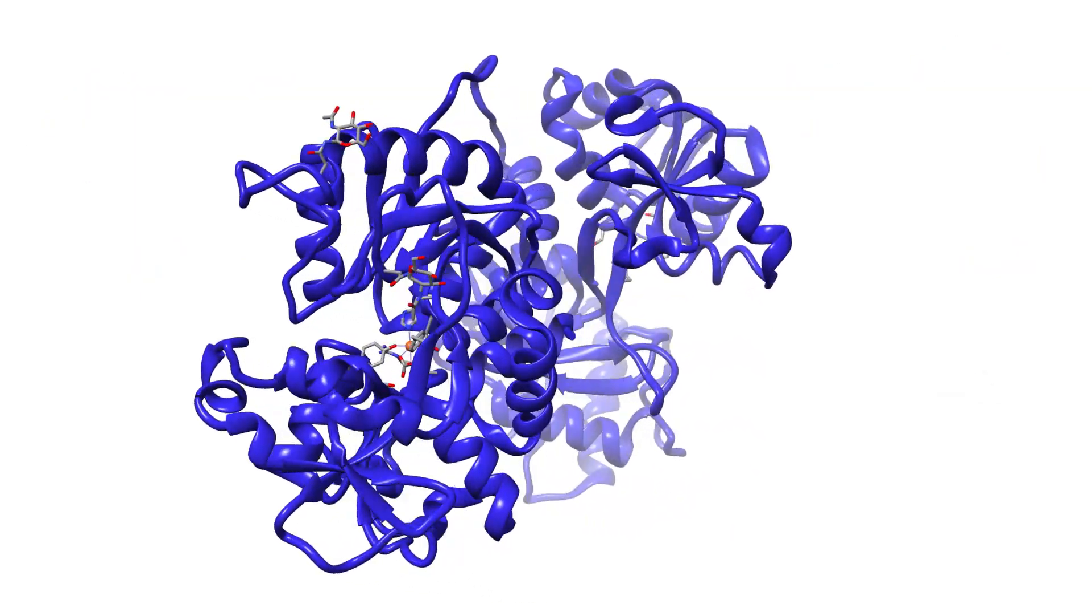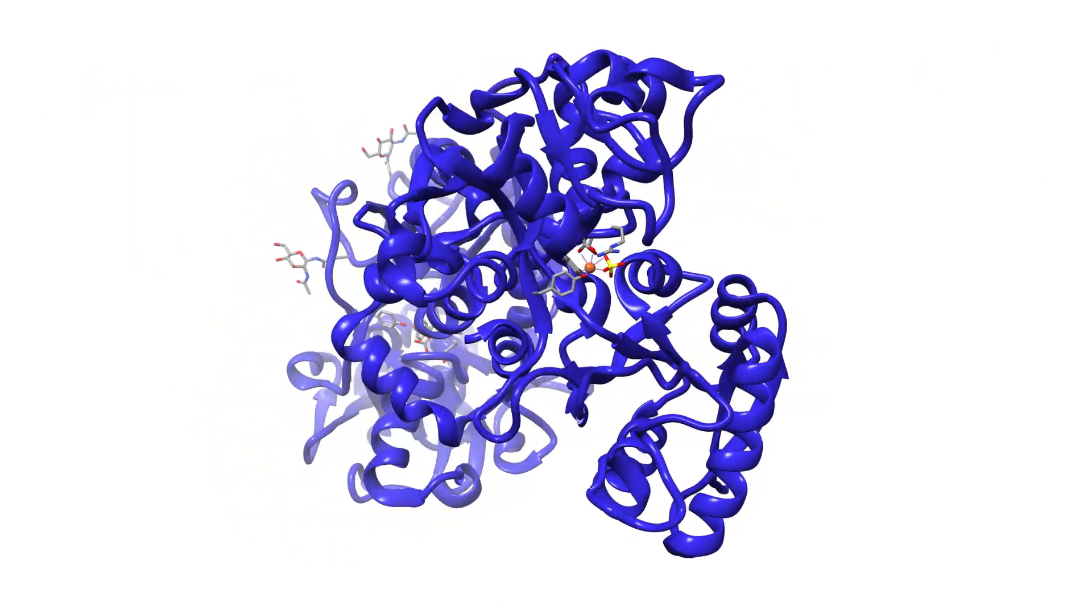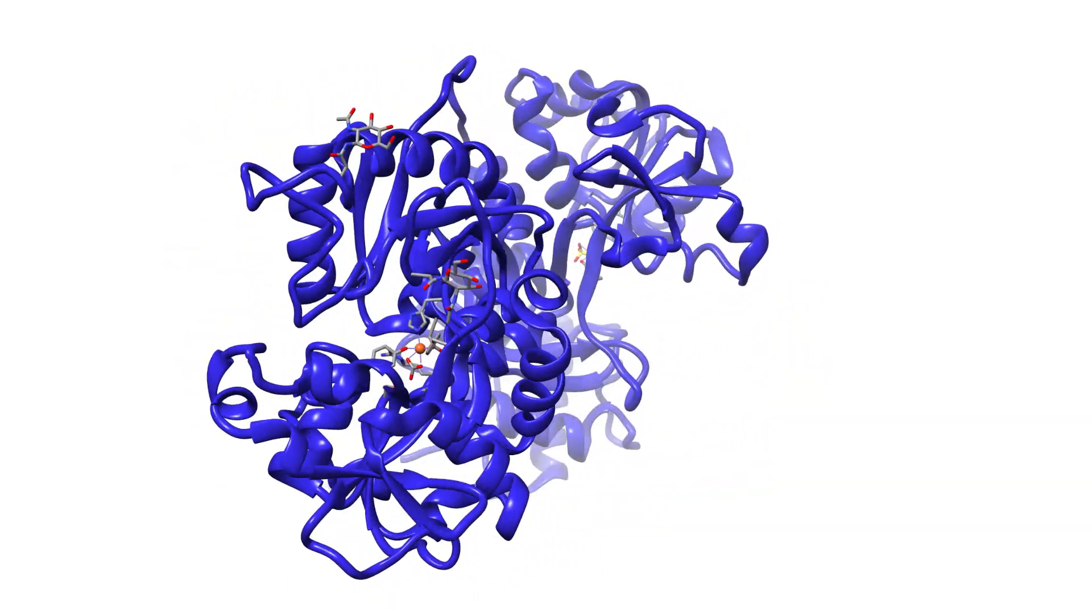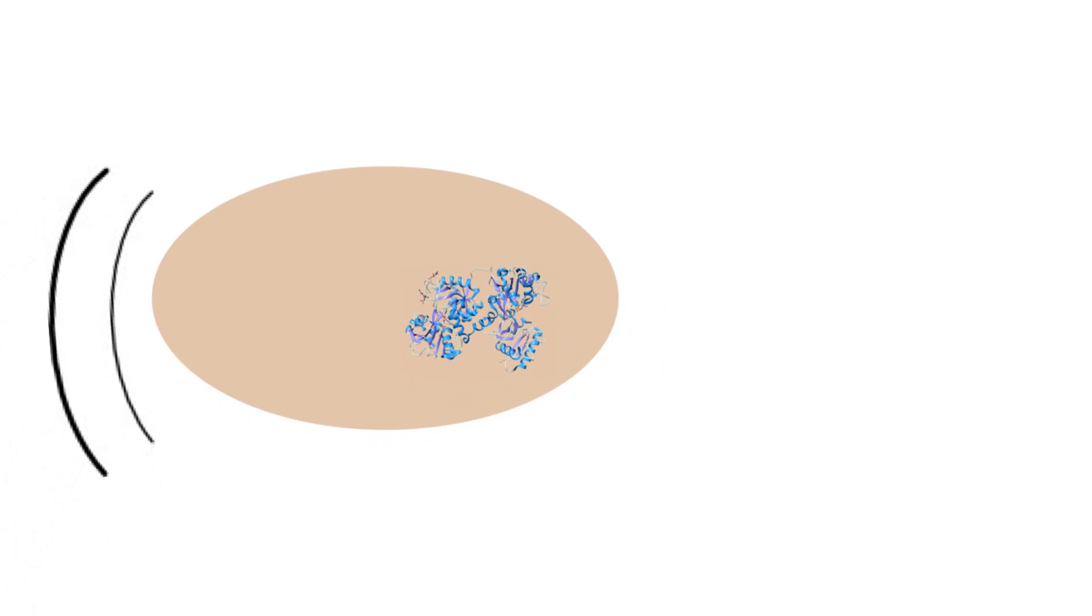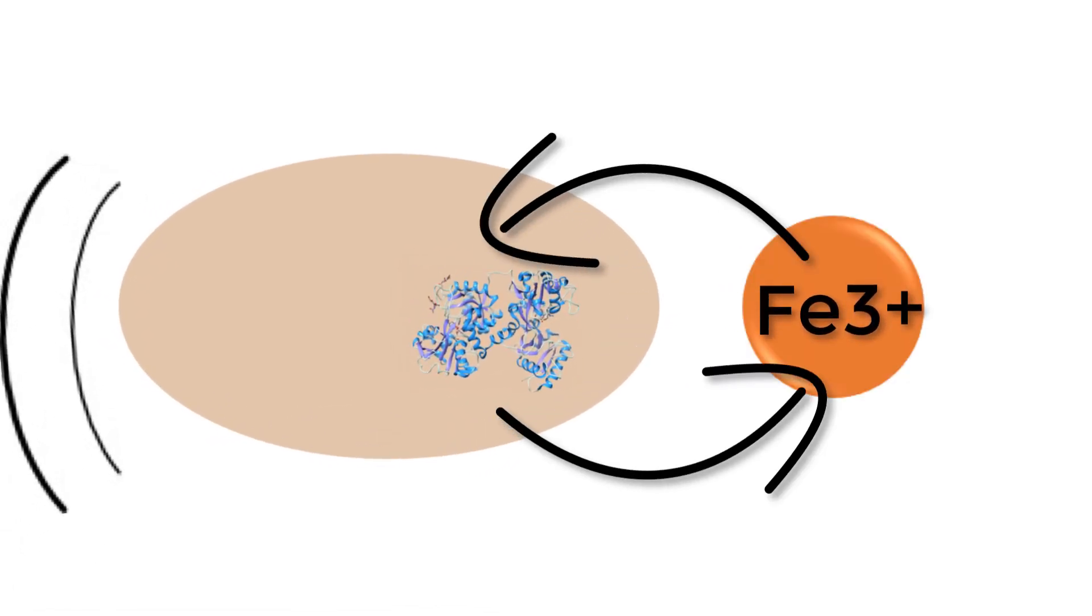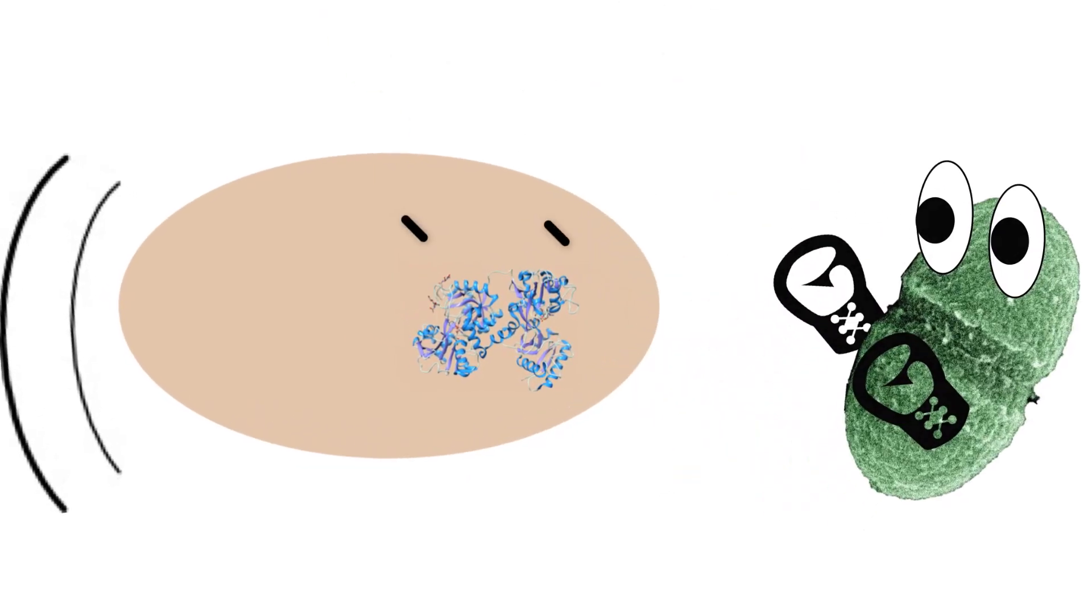Transferrin has a lower binding affinity to iron than lactoferrin does, and a slight dip below biological pH can trigger the protein to release its ion. This makes it useful to transport iron since it can bind and easily release the ion, but it is not as effective at fighting off bacteria.